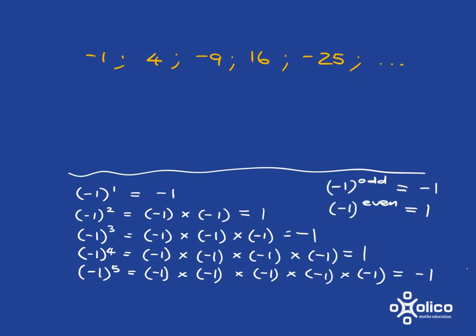I can now say that Tn is equal to negative 1 to the power of n, times n squared. Why? Well the n squared is obvious: 1 squared, 2 squared, 3 squared, 4 squared.